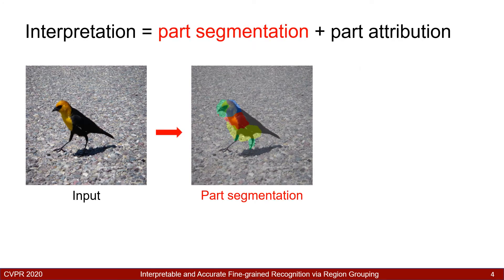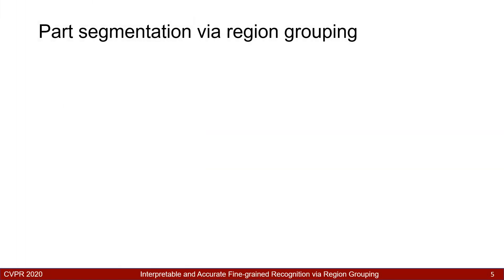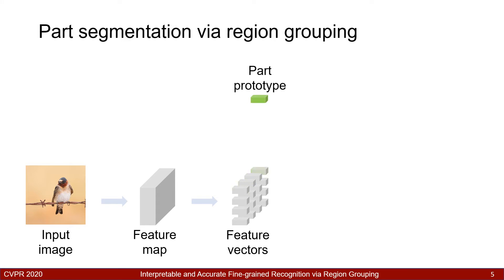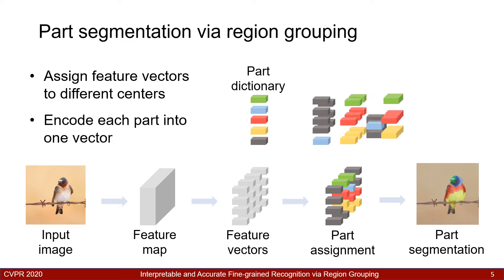The first step is to generate part segmentation. We propose to group the feature maps to discover meaningful object parts in an input image. Specifically, we extract a feature map from a convolutional network. This map defines feature vectors on the 2D plane. Given a prototype of a part, we compare each vector to this prototype and compute their similarity. With a part dictionary learned from the data, we repeat the comparison and assign feature vectors to their nearest prototypes, generating a part assignment map. We further encode each vector group assigned to a prototype into a region feature vector.